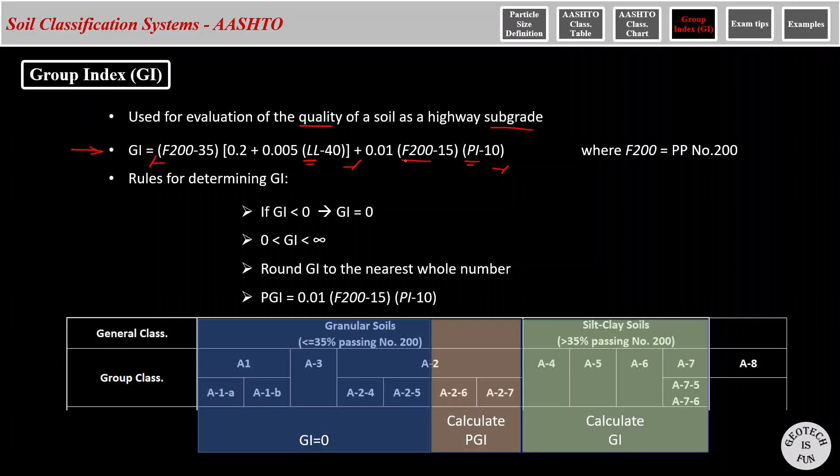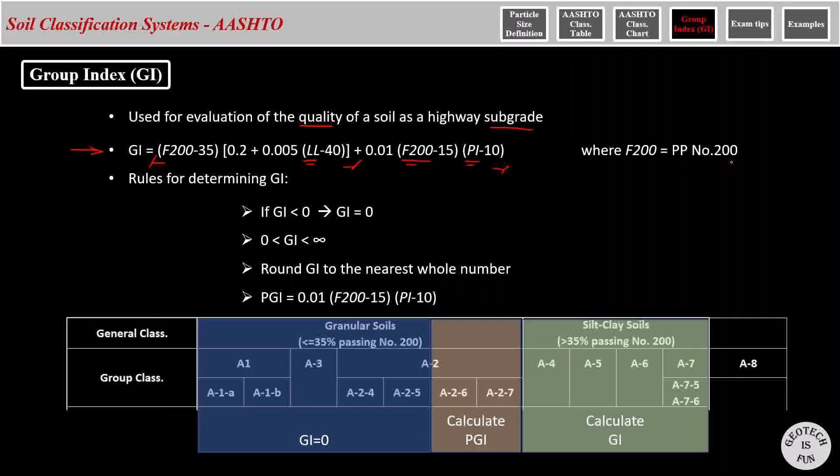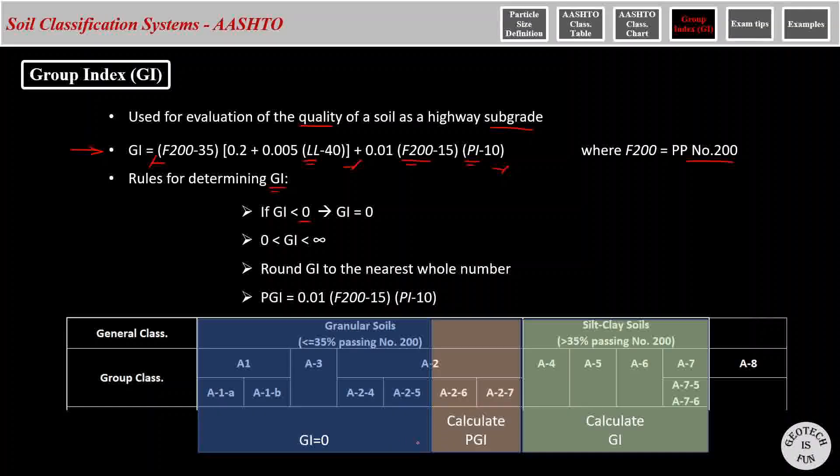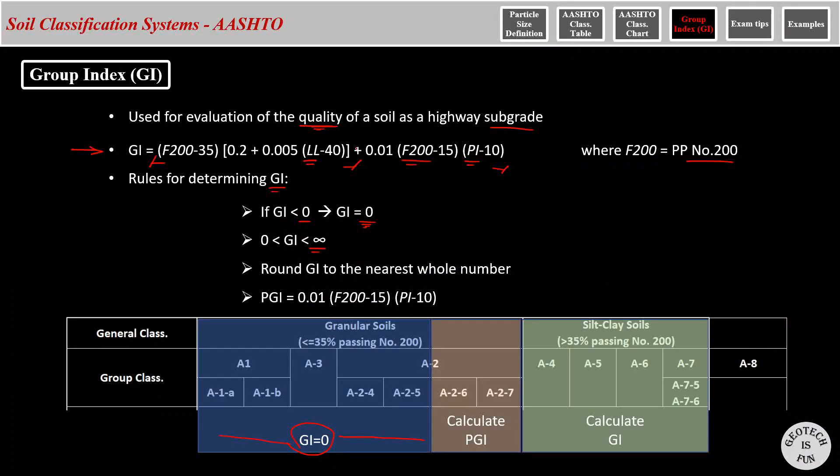In this equation, F200 is the percent passing sieve number 200. There are some rules in determining the GI. If the calculated GI using the equation is less than zero, which is mainly the case for these classifications, the GI should be assumed to be equal to zero. There is no upper boundary for GI, and it can be any positive number. And as a matter of fact, the quality of performance of a soil for a subgrade is inversely proportionate to the GI, meaning that the closer the GI to zero, the better quality material it is. And the higher the GI, the poorer quality it is going to be.